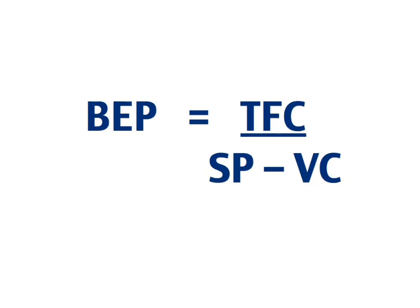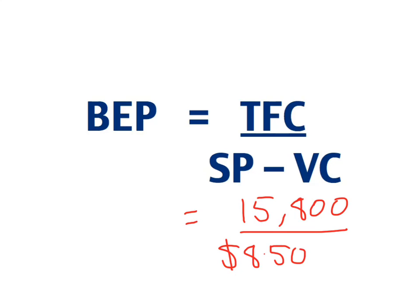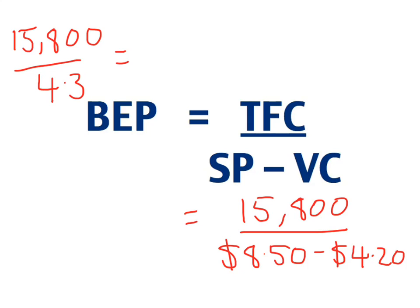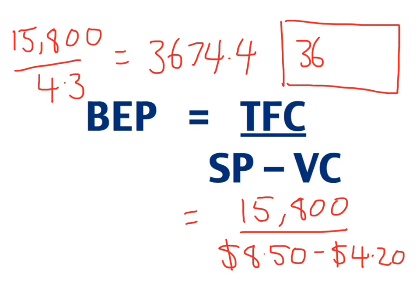In most cases the numbers won't be that simple. A more realistic example might look like this: to launch a new product it costs $15,800 in fixed costs, I sell it for $8.50, and the variable cost per unit is $4.20. That gives $15,800 ÷ ($8.50 − $4.20) = $15,800 ÷ $4.30 = 3,674.4. When I've sold 3,674 products I'm still 0.4 of a unit away from breaking even, so I'm still making a loss. I don't break even until I've sold 3,675 products — that is my break-even point.